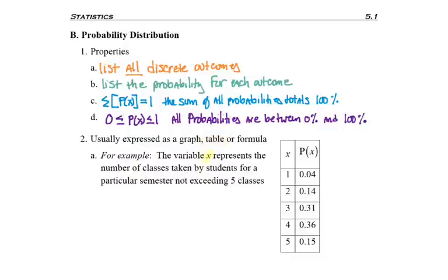The variable X, which is listed here, represents the number of classes taken by students for a particular semester. And we're going to assume it's not exceeding 5. So looking for our four criteria, all of the outcomes are listed.